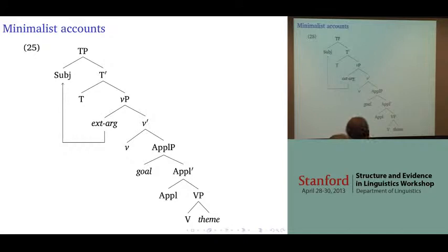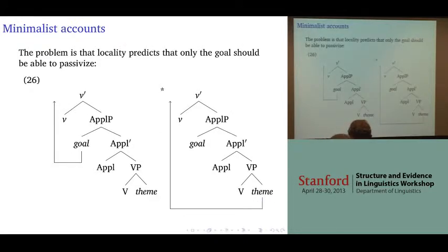You can see this in the following diagram: the external argument is the specifier of the little vP, the goal argument is the specifier of some other projection — often an applicative phrase — and then the theme is inside the inner VP.